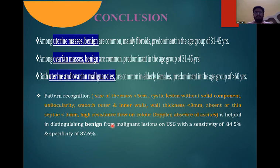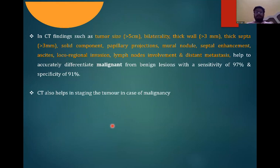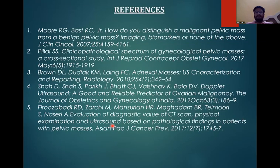On USG, with a sensitivity of 84.5% and specificity of 87.6%. On CT, findings such as tumour size more than 5 cm, bilateral thick wall more than 3 mm, thick septa more than 3 mm, solid component, papillary projection, mural nodule, septal enhancement, ascites, locoregional invasion, lymph node involvement, and distant metastasis help to differentiate malignant from benign lesions with a sensitivity of 97% and specificity of 91%. CT also helps in the staging of tumours in cases of malignancy.